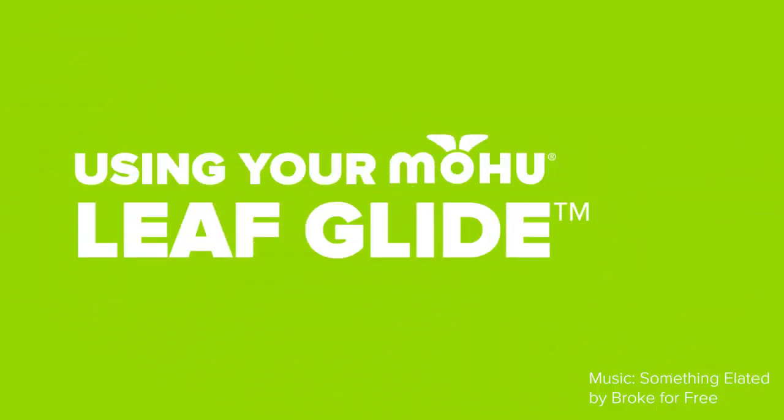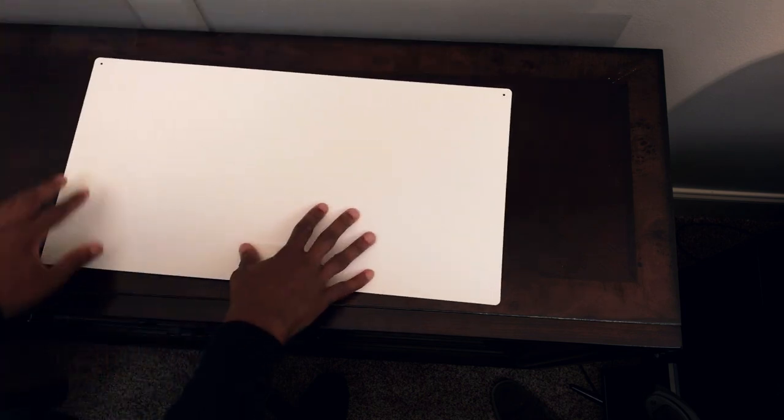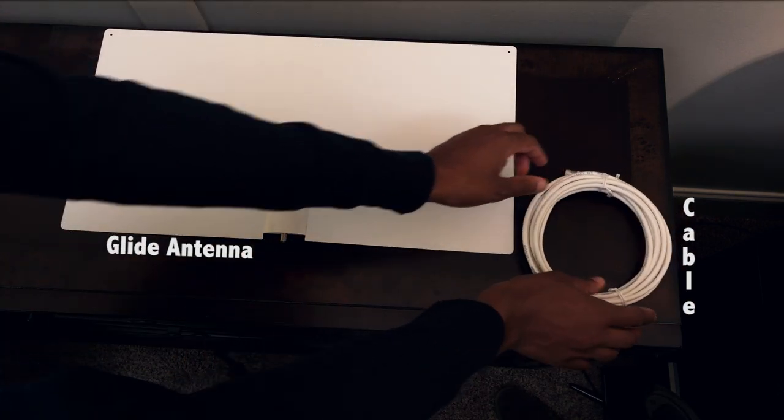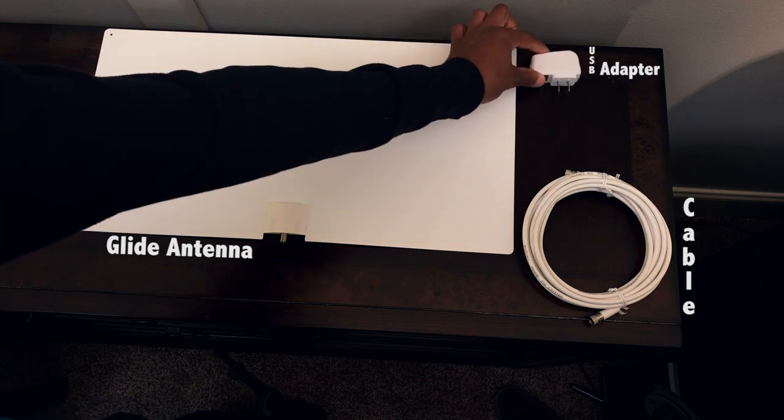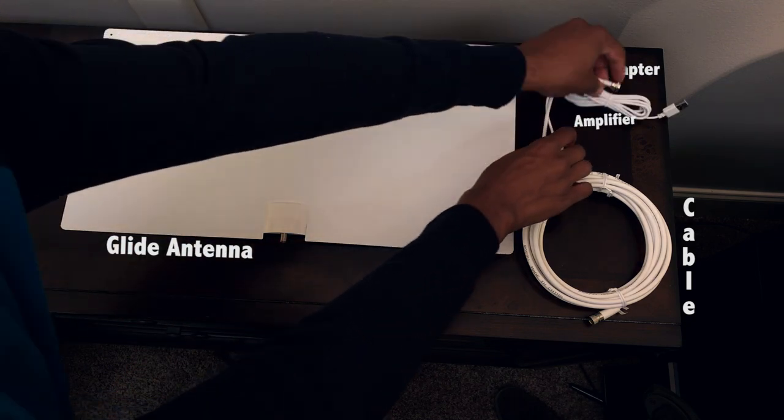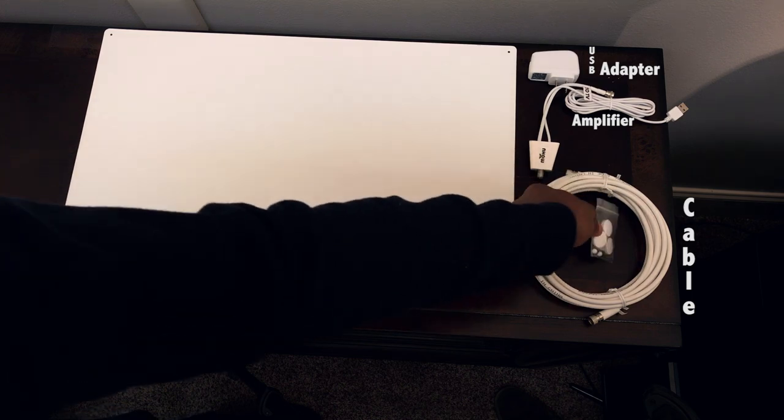Using your new Mohu Leaf Glide Antenna. In the box, you will find a Mohu Leaf Glide Antenna, a high quality coaxial cable, a USB power adapter, a Mohu Antenna Amplifier, and a packet of Velcro tabs and push pins.